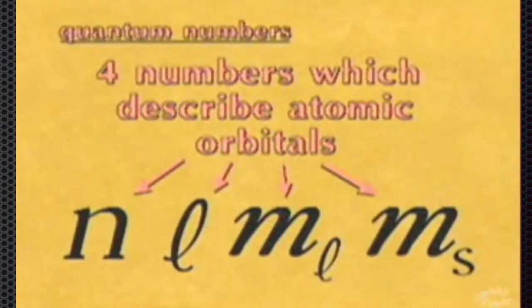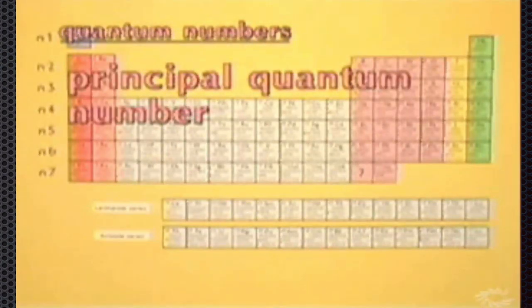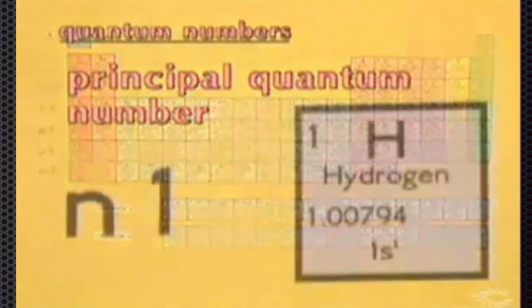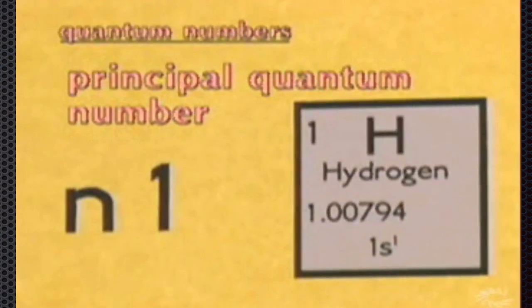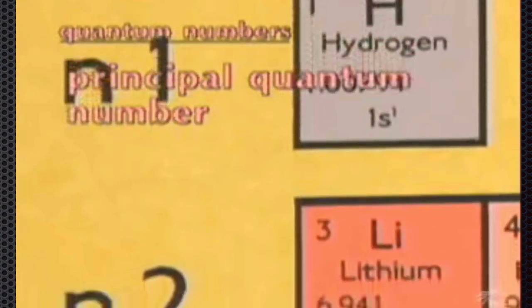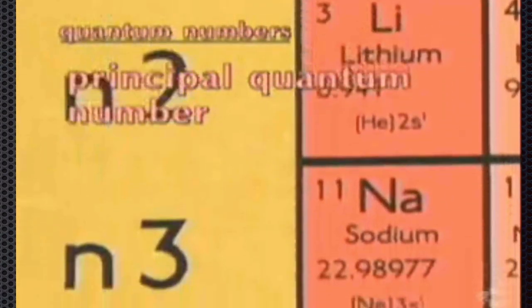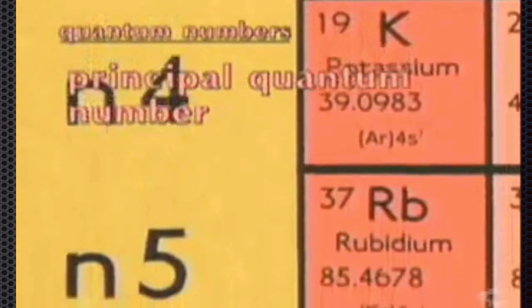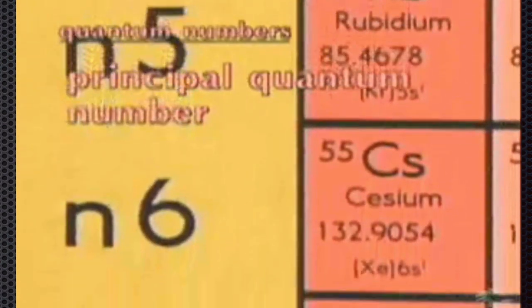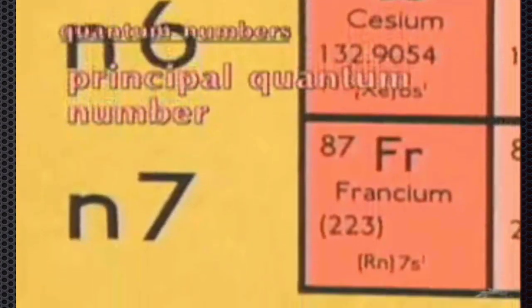Each atomic orbital may be described by a set of four quantum numbers. The principal quantum number is called n. As n increases in value, the atomic orbitals become larger in size and the electrons are found further away from the nucleus. As atomic numbers of elements increase, they have electrons in these larger orbitals and therefore the size of the atom increases.